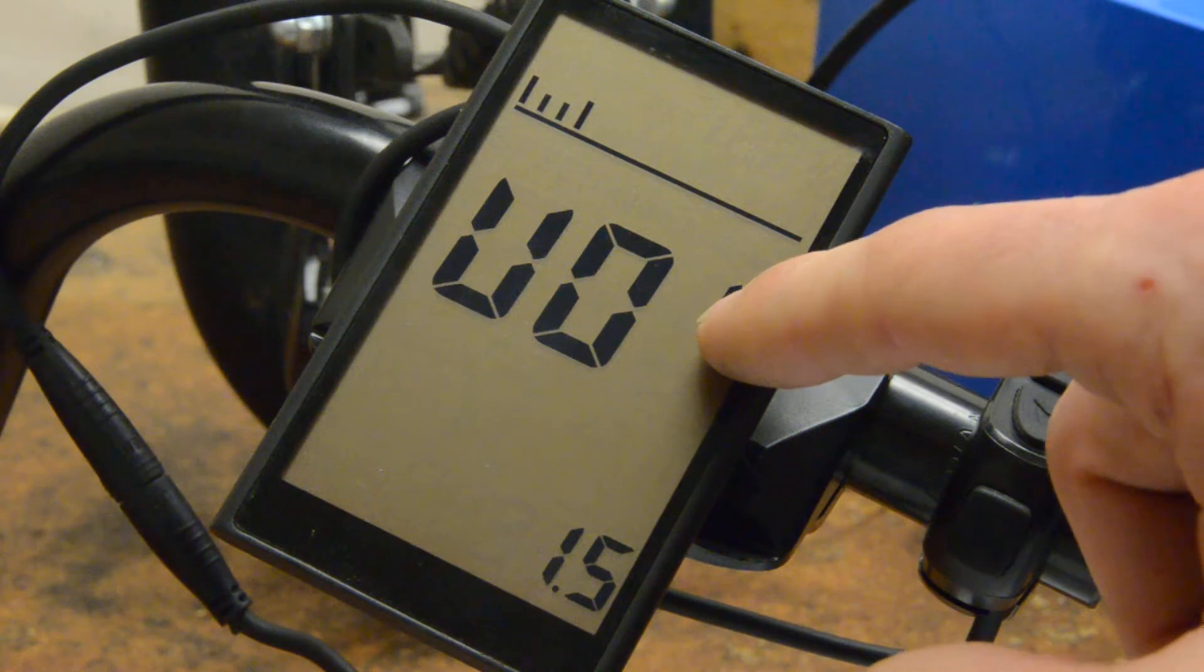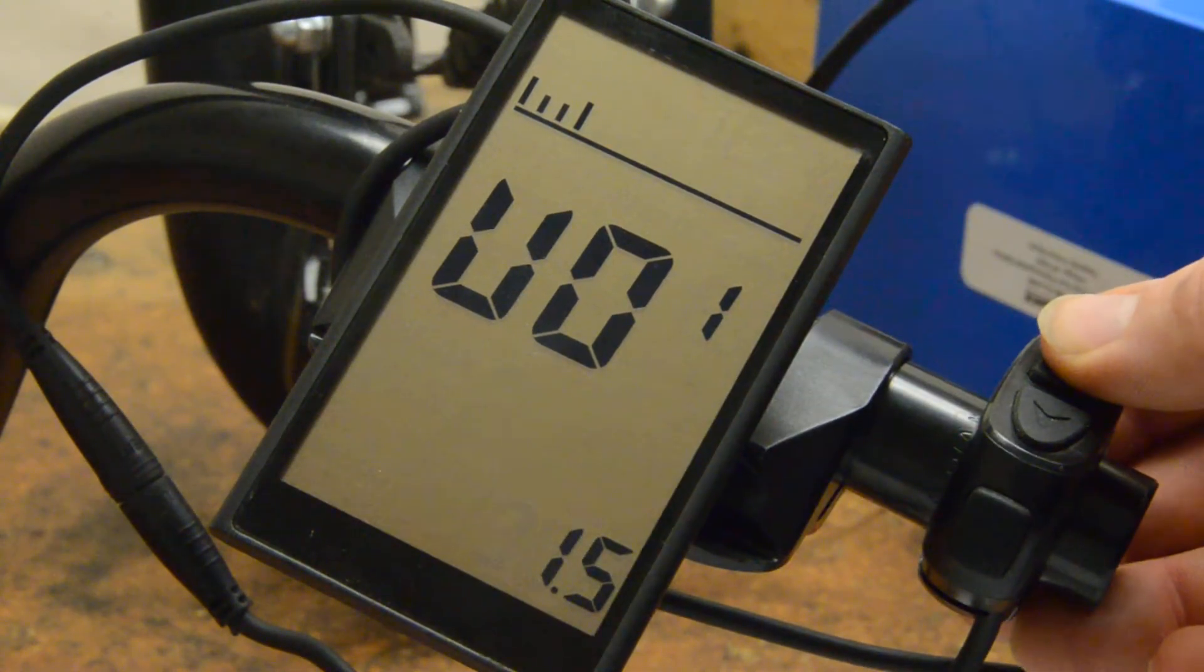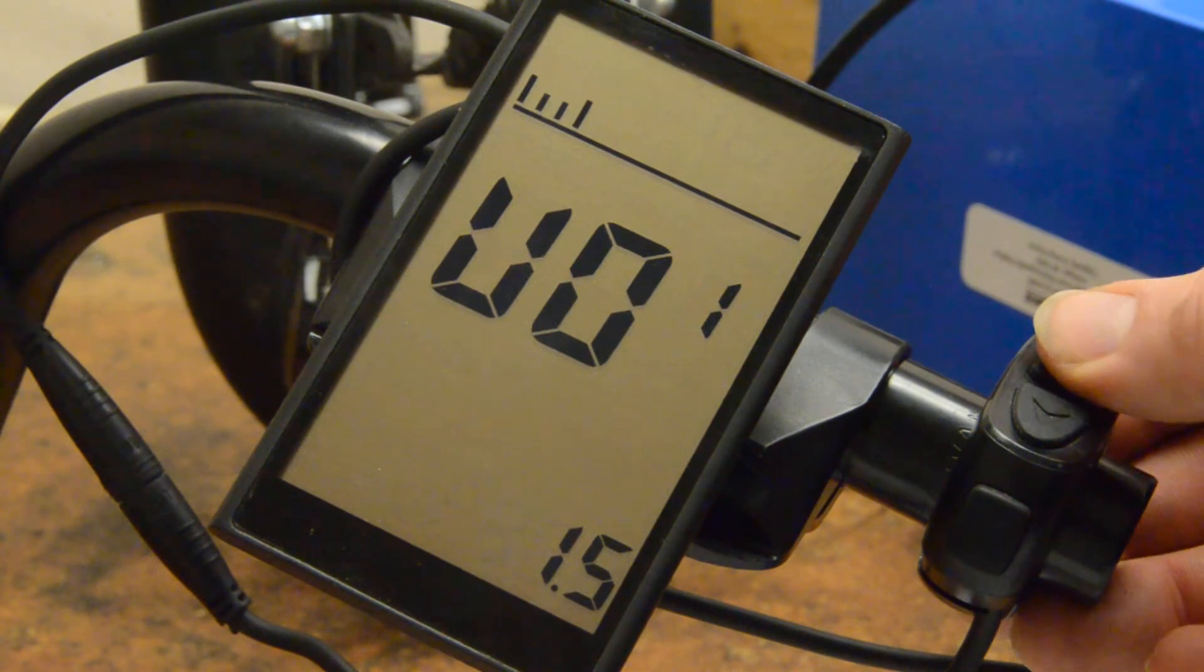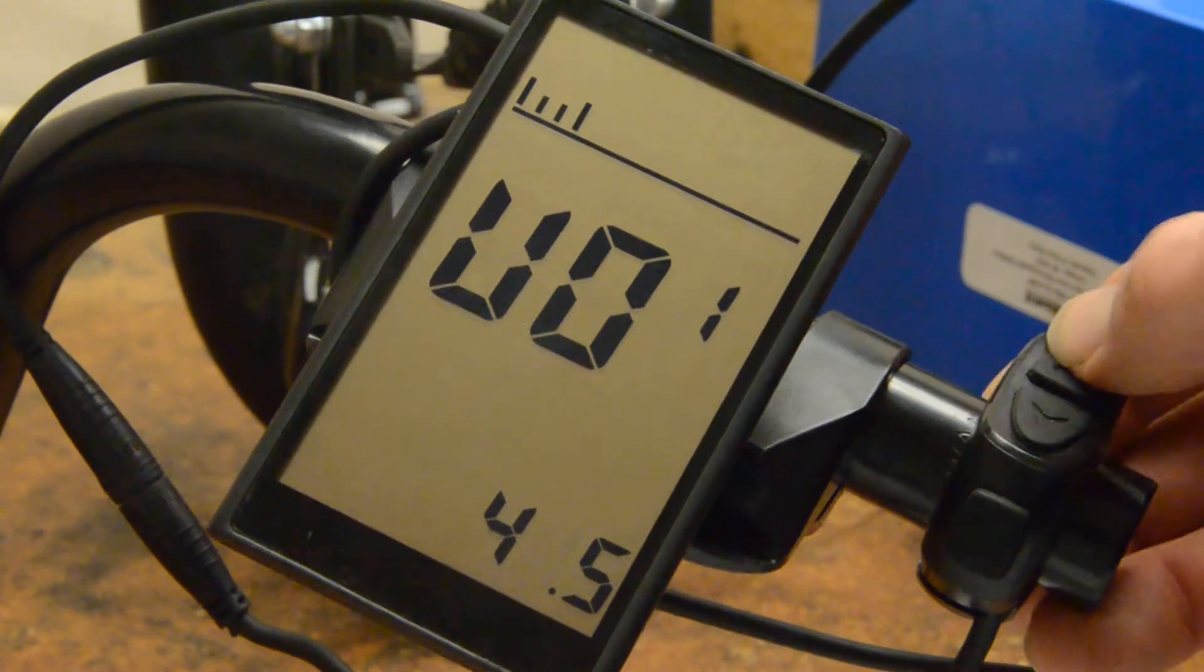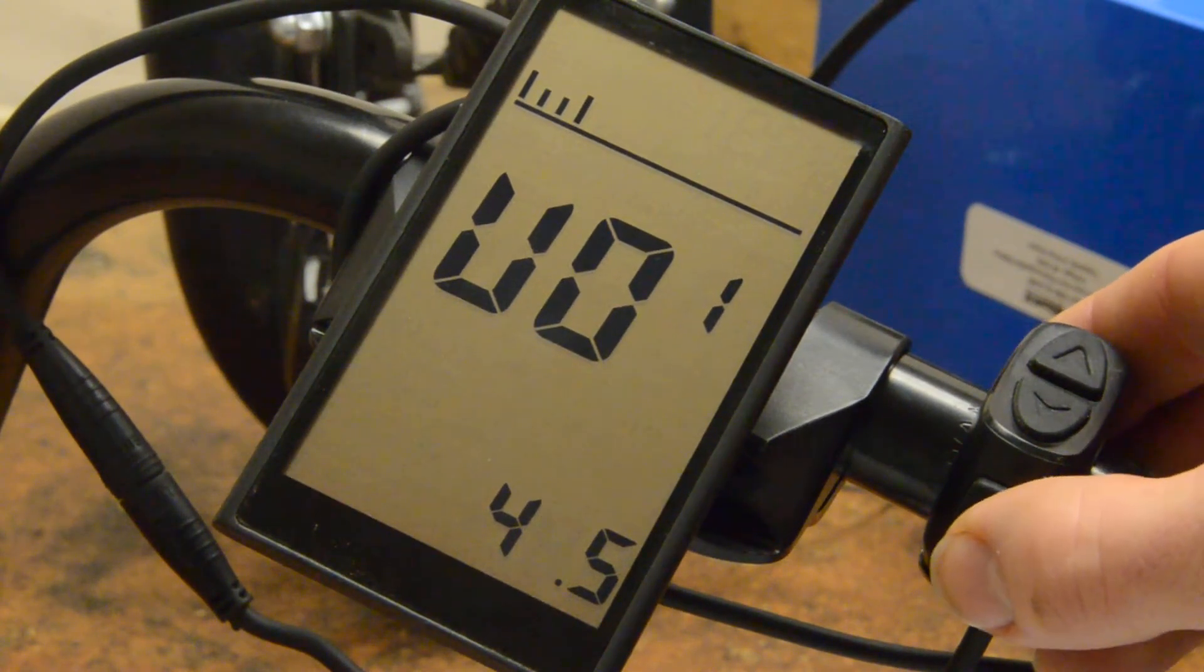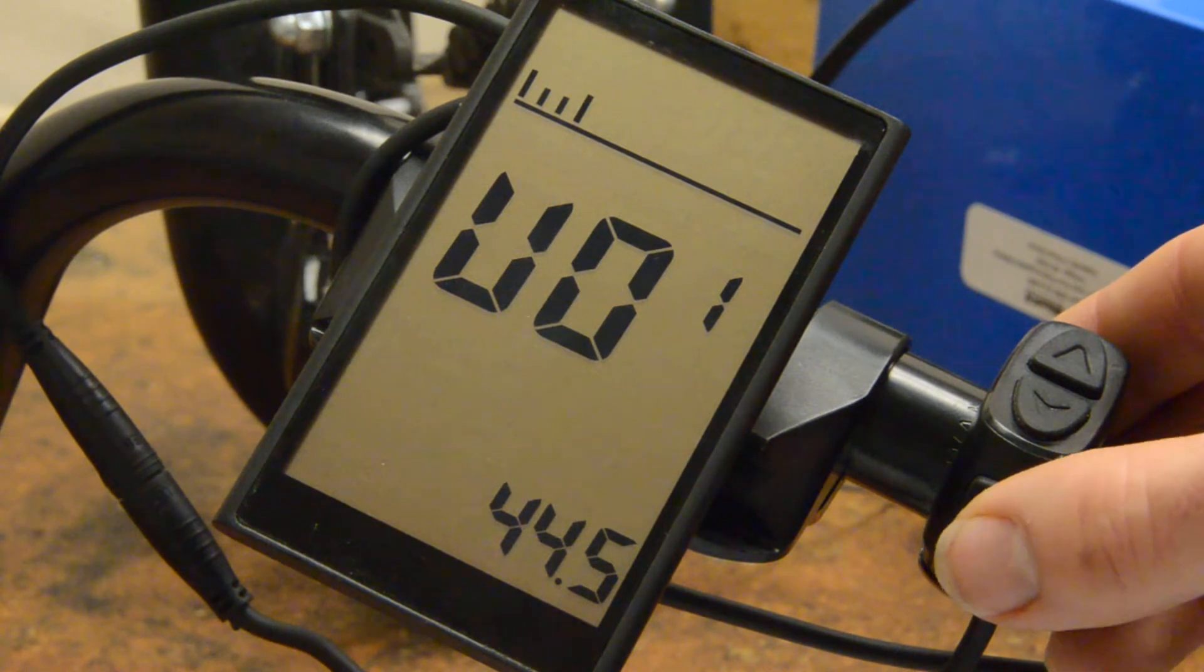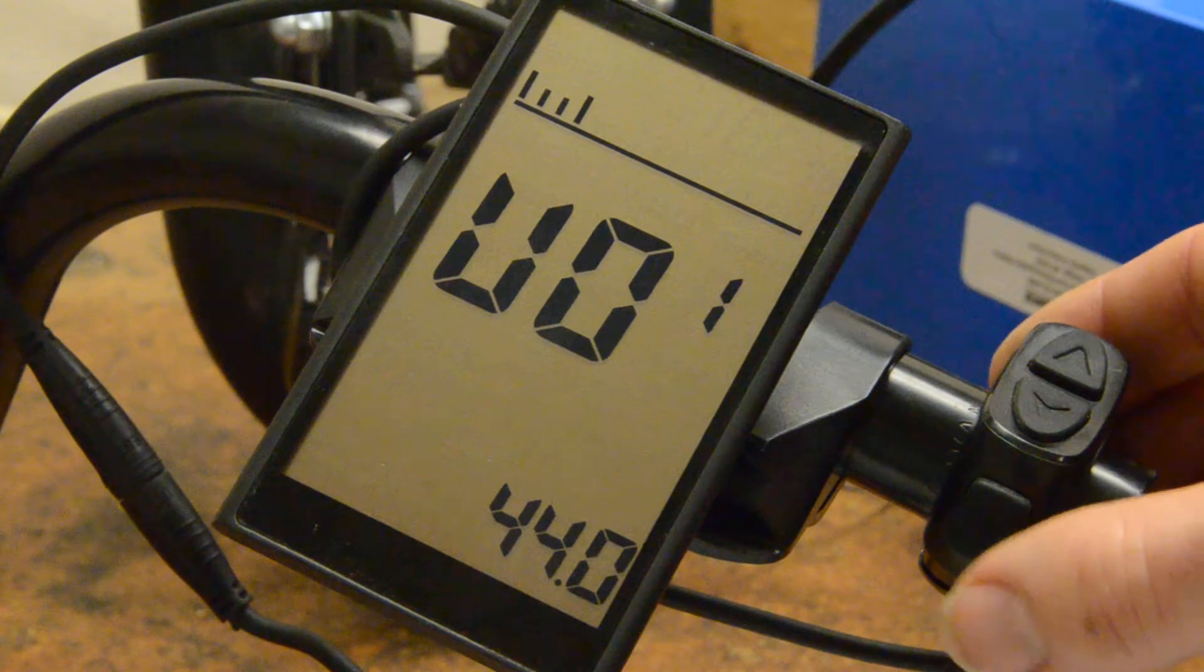We're going to set this to 46.0. So this digit is flashing. We'll change it to 4. We'll advance to the next digit and we'll change that to 6. And then using the M button we'll advance to the next digit and change that to 0.